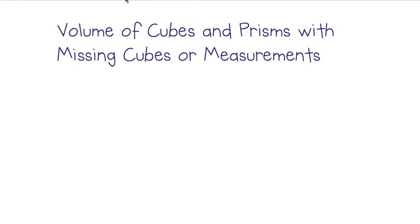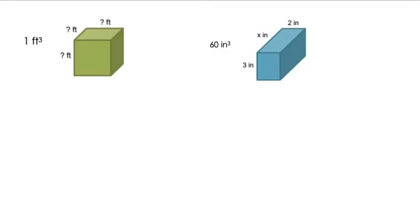We're going to learn two things with volume. First, we're going to find the missing measurement of a cube or prism that has the volume already given. And then once we finish doing those types of problems, we will move on to finding the volume where there are missing cubes. So let's begin with this first one where we're going to find missing measures.